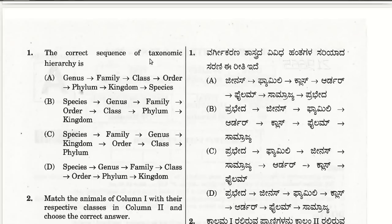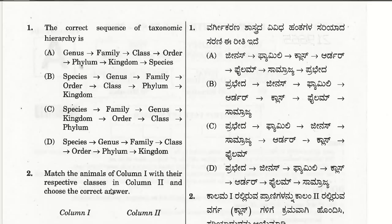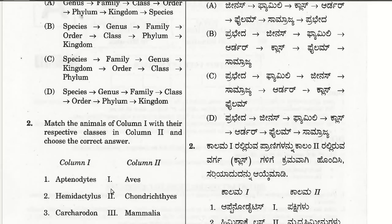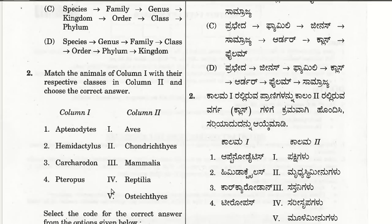The first question: the correct sequence of taxonomy hierarchy. The right choice is B, where from the least to the highest: species is the least in the taxonomy hierarchy, followed by genus, family, order, class, phylum, and the highest level in the taxonomy hierarchy is kingdom. So B is the correct choice. The second question is to match the animals of column one with their respective classes in column two.